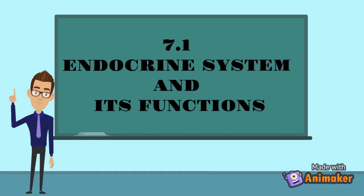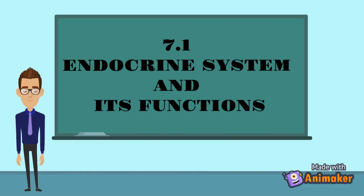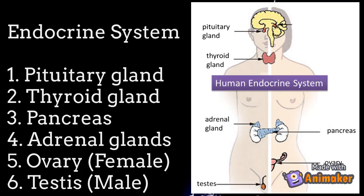Okay class, we go to the topic that consists of body coordination. The first one is the human endocrine system and its functions. Please pay attention for the entire explanation. The endocrine glands are ductless glands that secrete hormones directly into the blood.